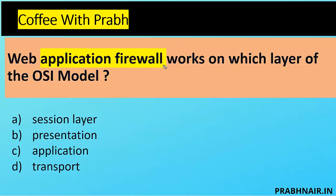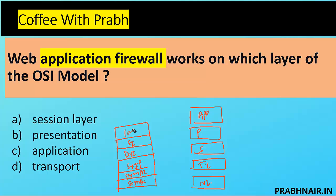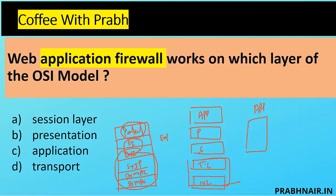Next question: a Web Application Firewall works on which layer of the OSI model? Consider the packet format — it contains source MAC, destination MAC, source IP, destination IP, session ID, and content. A regular firewall on the Network Layer monitors up to source/destination IP. A Transport Layer solution monitors source and destination ports. But neither monitors application-layer content, which is why we introduce the Application Layer firewall — it monitors content specifically.